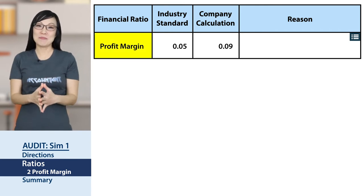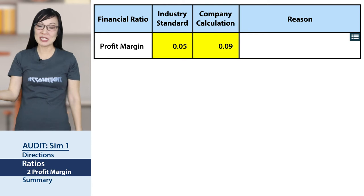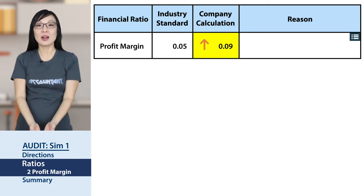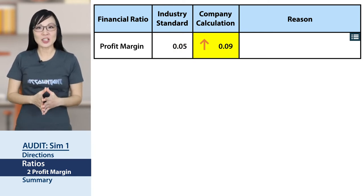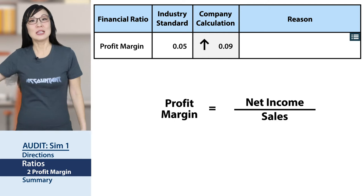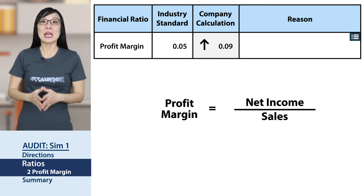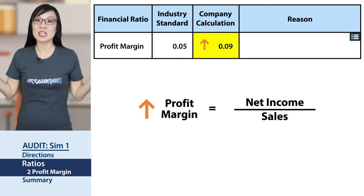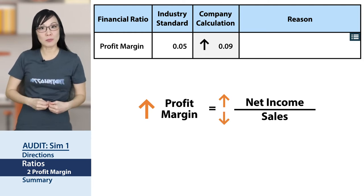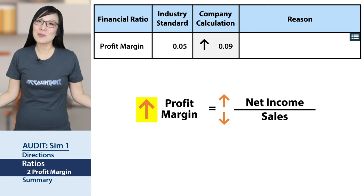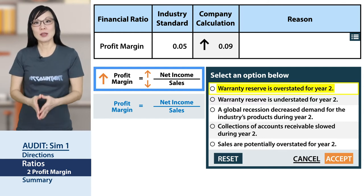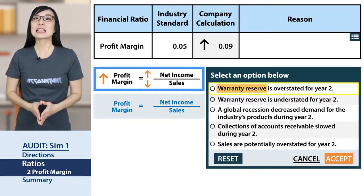On to profit margin: industry standard 0.05, company's calculation 0.09. The company's number is higher. Profit margin equals net income divided by sales. The company's number is higher than the industry standard, so either net income is higher or sales are lower. Looking at the choices — choice A: warranty reserve is overstated for year two. Let's use a journal entry: warranty expense and warranty liability are recorded together.